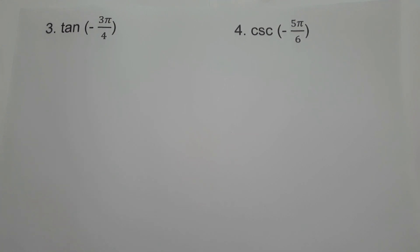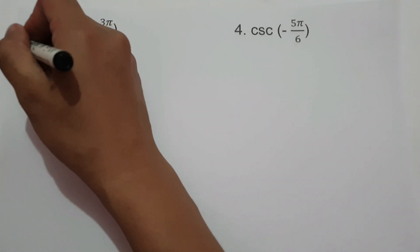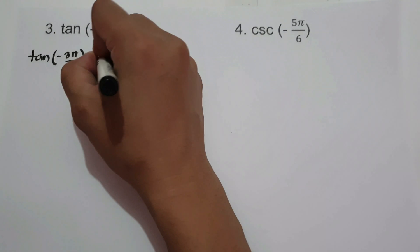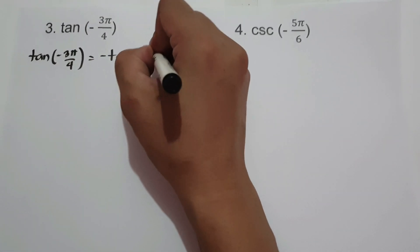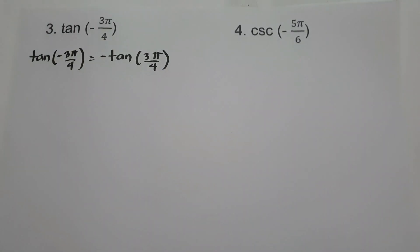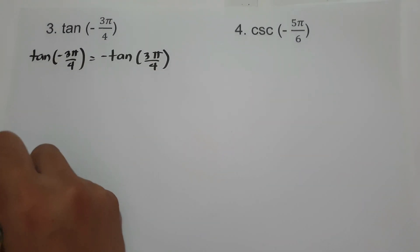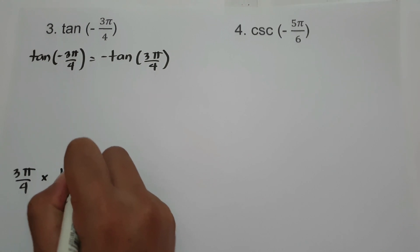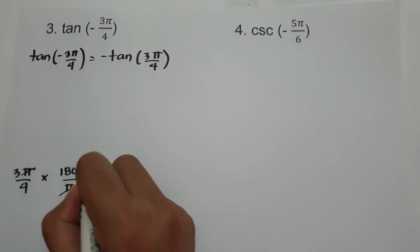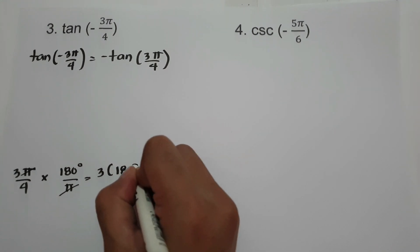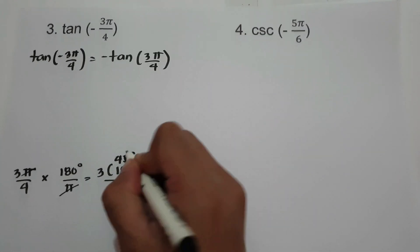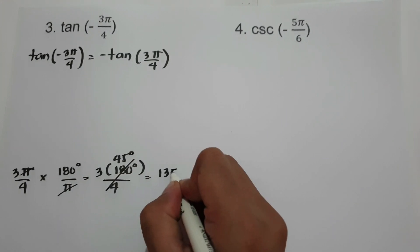On number 3, we have tangent(-3π/4). Tangent is an odd function. Therefore, tangent(-3π/4) = -tangent(3π/4). Let us convert 3π/4 into degrees: 3π/4 × (180°/π). Cancel π, and we have 3 × 180° / 4. 180 divided by 4 is 45 degrees, and 45 times 3 is 135 degrees.